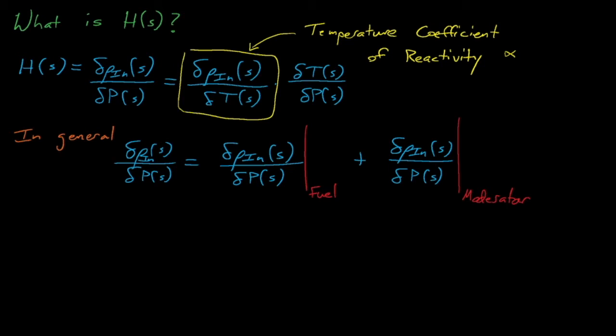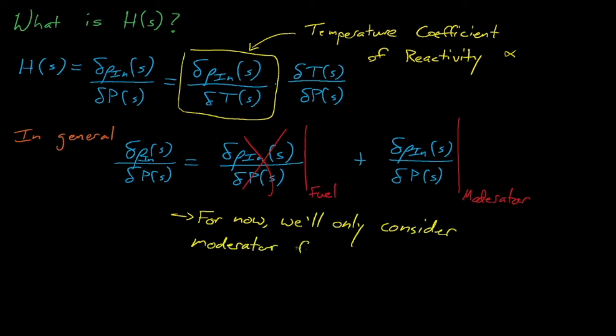These reactivity coefficients are generally a function of temperature, but for our purposes we'll assume that these values of alpha are constant over all temperature ranges. Internal reactivity effects can arise from any temperature change in the reactor, and we generally divide this feedback into two components: first, feedback from the fuel temperature changes, and second, feedback from the moderator temperature changes. For the time being, we will only consider moderator feedback, but we'll explore fuel feedback effects in the next lecture.